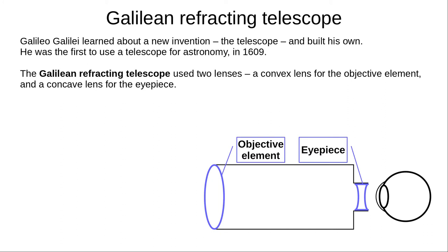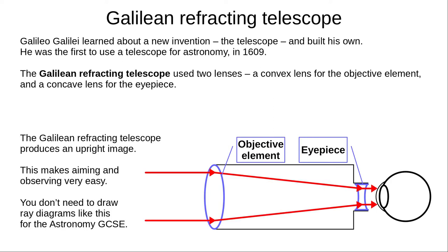Galileo Galilei is often credited with inventing the telescope — he didn't, but he did improve the design and was the first to use one for astronomy in 1609. The Galilean refracting telescope has two lenses: a large convex lens for the objective element, and a smaller concave lens for the eyepiece. You can see the path of light traced through a Galilean telescope here — you don't need to draw ray diagrams like this for the GCSE. A Galilean refracting telescope produces an upright image, which makes aiming and observing very easy.